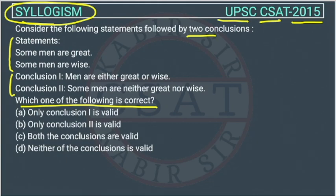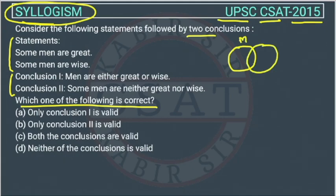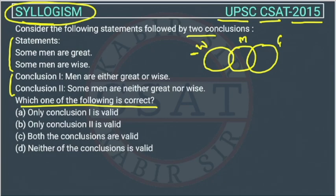The first statement is: some men are great. We will solve this question through a Venn diagram — this is the Venn diagram for when some men are great. The second statement is: some men are wise. There is no relationship between wise and great given in the statements.